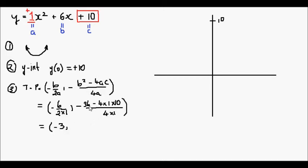And for our y-coordinate, 36 minus 40 is negative 4. So that's minus negative 4 divided by 4. And that's going to yield us negative 3 comma positive 1.